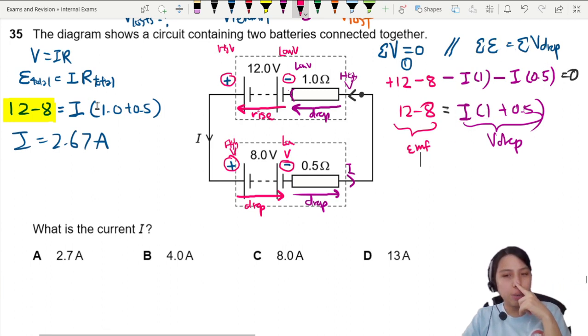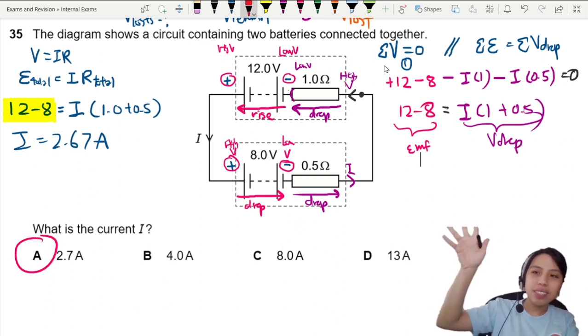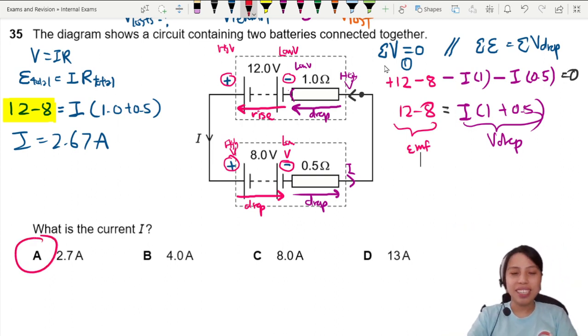So two methods. The first method can apply for basic equations, but for more complicated circuits, it's recommended to use this idea - as you travel around a circuit, you go up, you come down, you go up, come down, but you come back to the same spot, you should be at the same potential. So the best answer here is 2.7A. That's how we can find this.